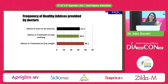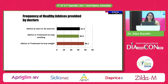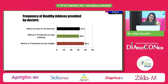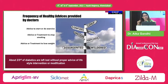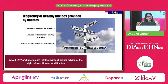Guidelines are in place and we know everything — but what is the ground reality? The ground reality is very different. Looking at the percentage of people who receive healthy advice from doctors: advice to exercise is only 30%, advice or treatment for smoking around 30%, and advice to lose weight around 38%. Two-thirds of diabetics are left without proper advice on lifestyle intervention.